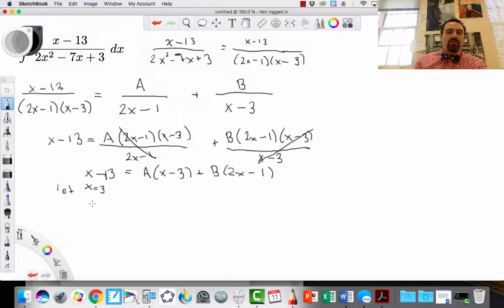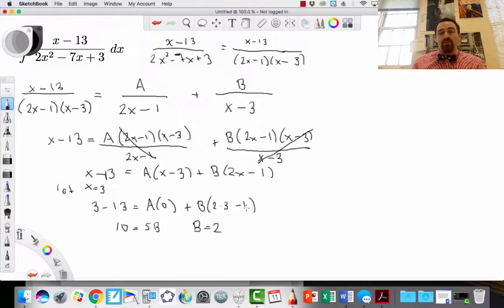I'm choosing x equals 3 because that causes this factor to go to 0. So let's do it. 3 minus 13 equals A times 0 plus B times 2 times 3 minus 1. That means that I have negative 10 equals 0 plus this is B times 5, so 5B. That makes B equal to 2.